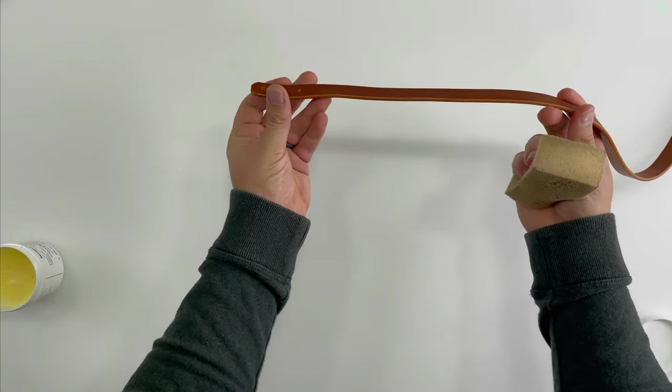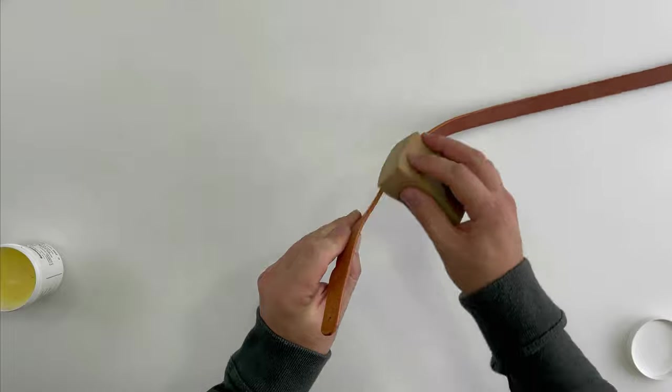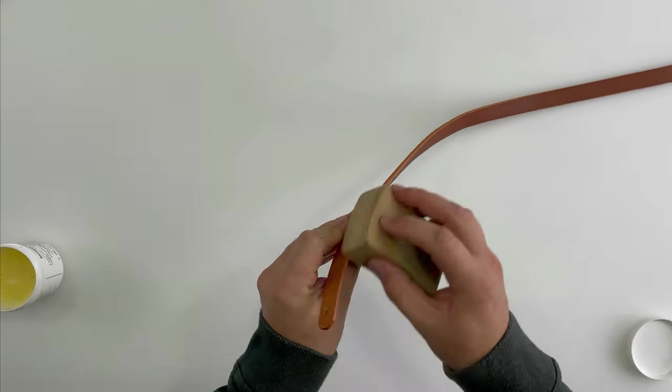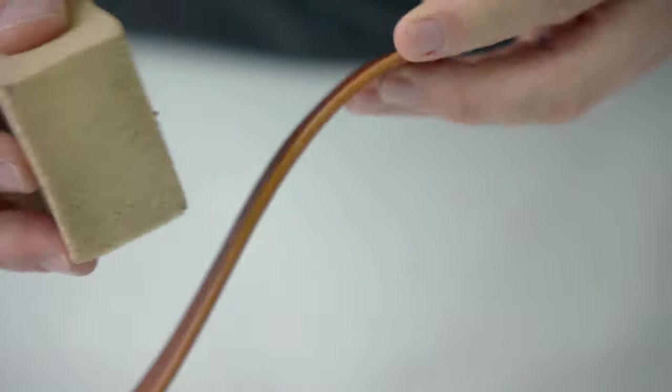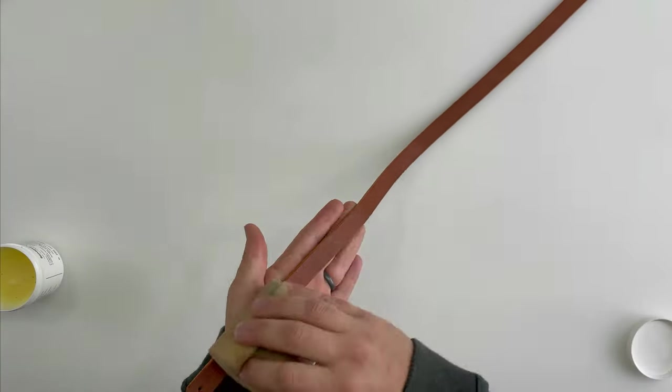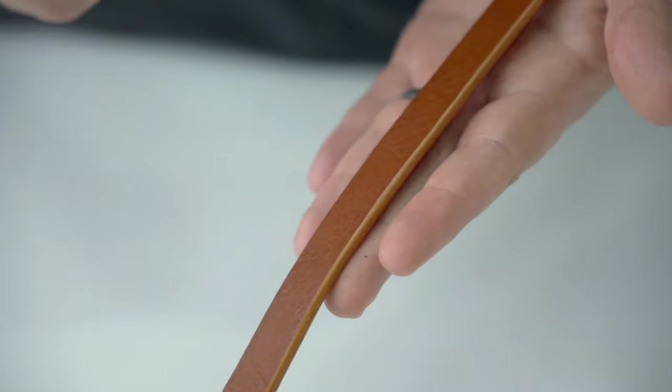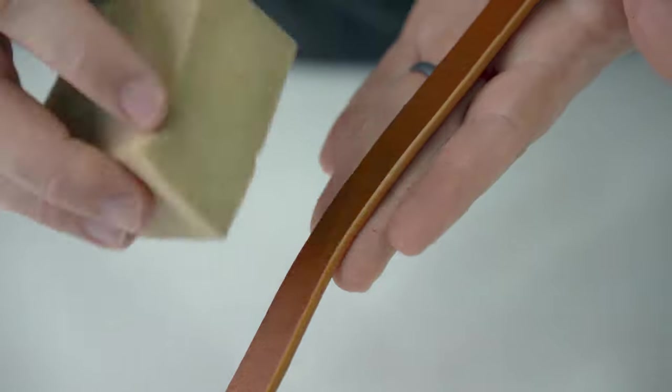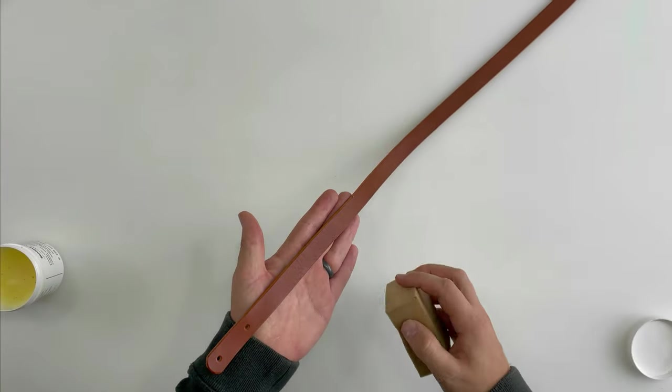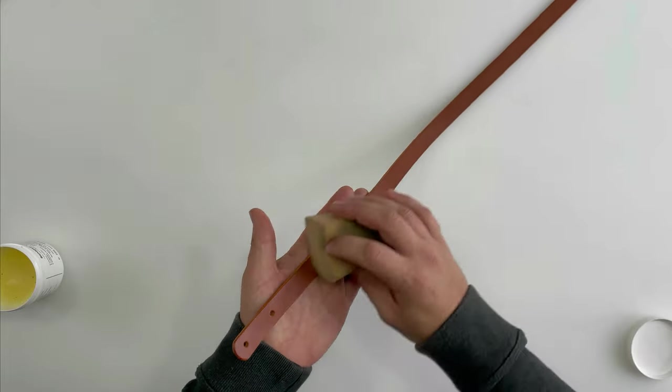It just brings out the color a little bit more in the strap. I also like to run it down the edge. I'm just going to do that up and down the entire strap. This will protect the strap, add a bit of color to it, and then I'll get a dry cloth afterwards and just buff it off a little bit, get rid of the excess, and then the strap will be done.